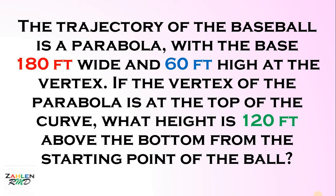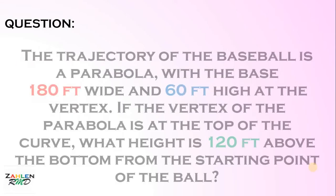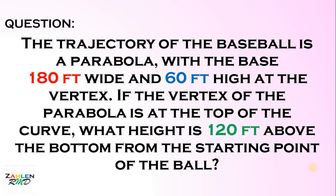Good day, everyone. This problem is suggested by one of our viewers. Here's the question: the trajectory of the baseball is a parabola, with the base 180 feet wide and 60 feet high at the vertex. If the vertex of the parabola is at the top of the curve, what height is 120 feet above the bottom from the starting point of the ball?